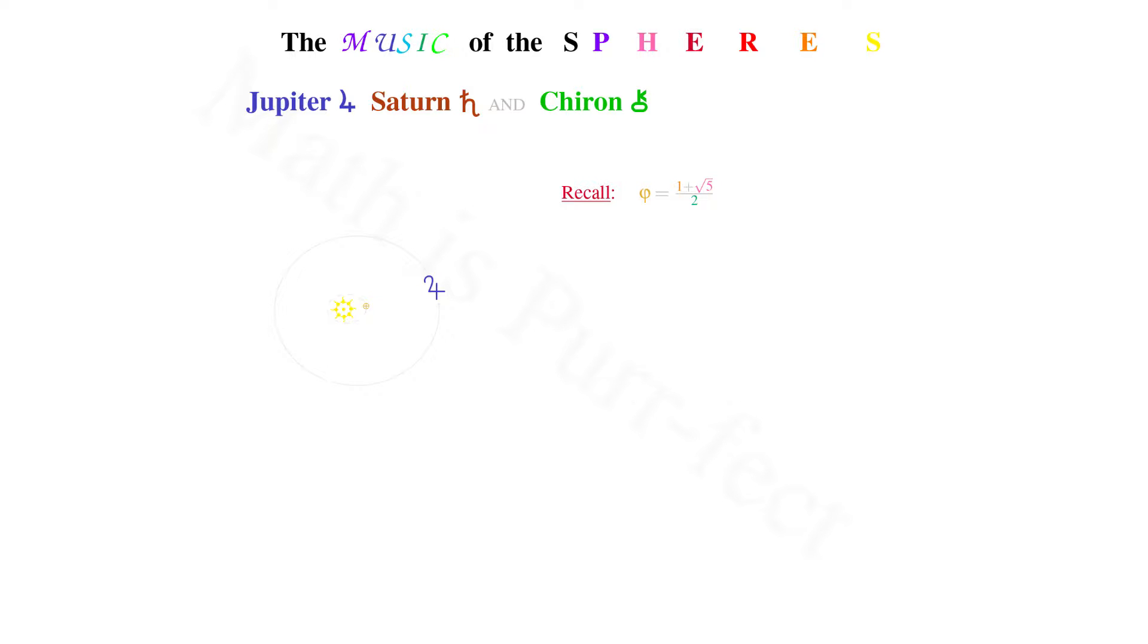Recall that the golden ratio has a value of (1 + √5)/2. In this video, I would like to illustrate the sacred nature of phi.